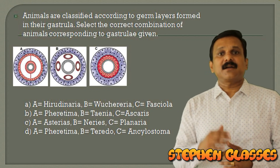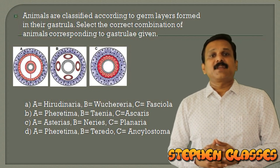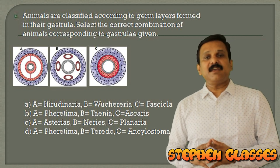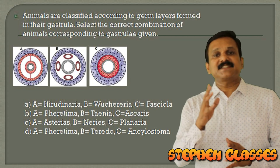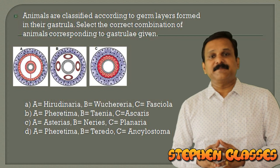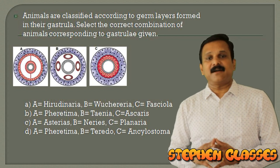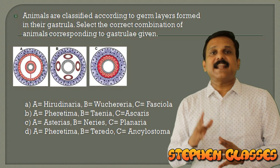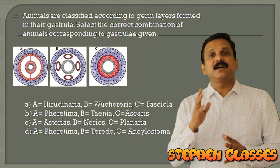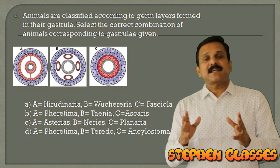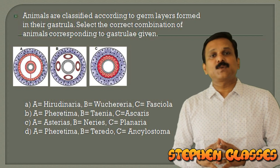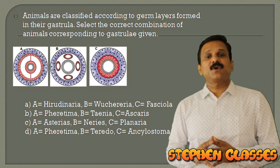In this question, picture A belongs to coelomates, picture B to pseudocoelomates, and picture C to acoelomates. The answer is option A: Annelida has a true coelom; Ascaris, a roundworm in the Aschelminthes group, has a pseudocoelom; and Fasciola, a flatworm, has an acoelomate condition.